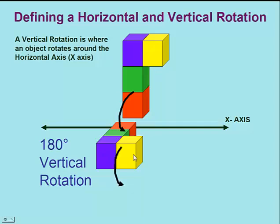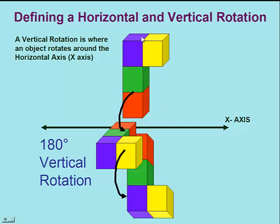We'll do another 90-degree rotation, making a full 180-degree vertical rotation towards you. The top part of the object is now the bottom part of the object.